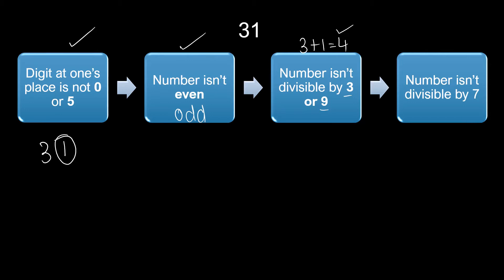For checking divisibility by 7, I know that 7 times 4 is 28 and 7 times 5 is 35. That means the number is not divisible by 7. So it is a prime number because it has crossed all four levels.